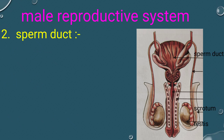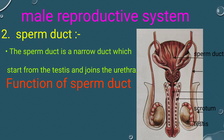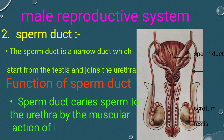Sperm duct: The sperm duct is a narrow duct which starts from the testis and joins the urethra. Function of sperm duct: The sperm duct carries sperm to the urethra by the muscular action of its wall.